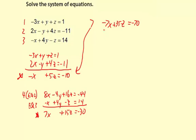Then 7x plus 15z equals negative 30. Now I'm going to add. Negative 7x plus 7x is 0, 35z plus 15z is 50z, and negative 70 plus negative 30 is negative 100. Divide both sides by 50, we get z equals negative 2.